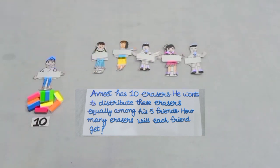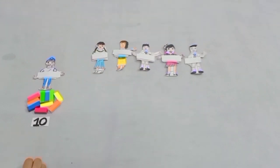Students, you can see Avneet is having ten erasers. He wants to distribute or divide these erasers equally among his five friends.